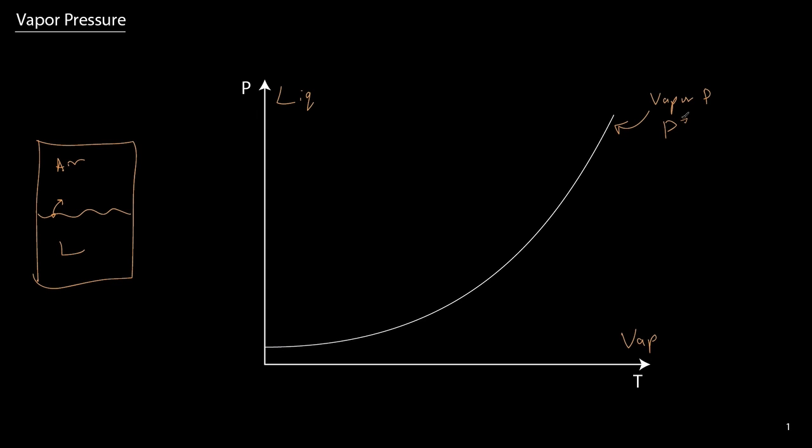Typically we'll write this as P star as a function of T. The reason why we write out the vapor pressure like this is as a reminder that the vapor pressure is a very strong function of temperature. You can see here it is an exponential function of temperature, with very weak functionality at low temperatures and a very high dependence on temperature at higher temperatures.